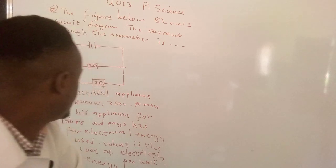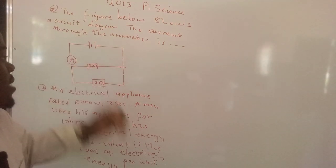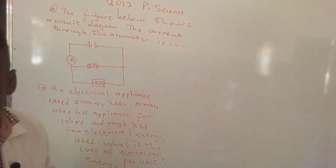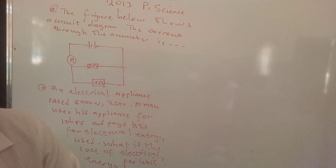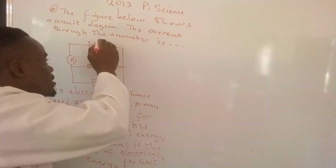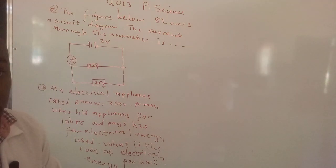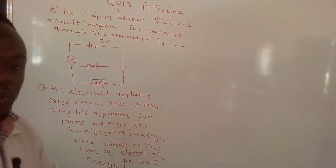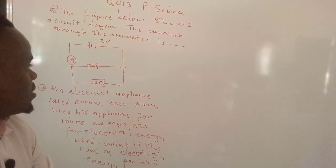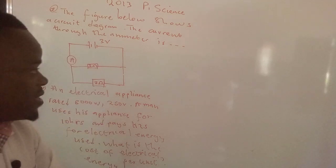We have this figure at the bottom here. The question now is what's the current through that ammeter? There's something missing here. Let's check out: this voltage is missing. The potential difference across that battery is actually three volts.